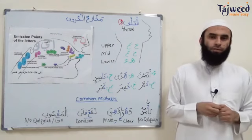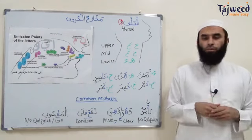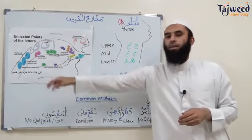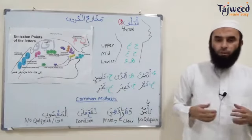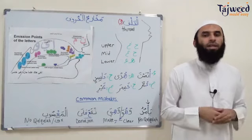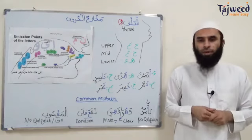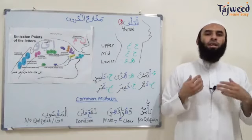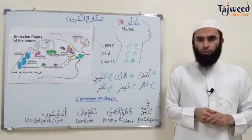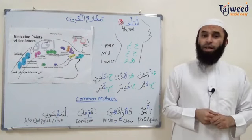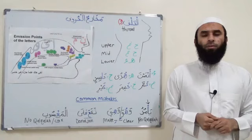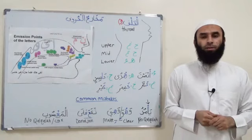So today we looked at al-halq, the throat. We found out there are three different makhraj points — one in the lower part, middle part, and upper part of the throat. These letters are not pronounced in many languages, so we just have to put a bit more extra effort — with practice inshallah we'll get it right. In the next lesson we're going to do al-lisan, the tongue, which has the most letters. Until then, jazakumullah khairan, wassalamu alaykum wa rahmatullahi wa barakatuh.